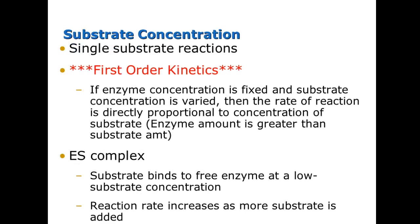When we look at how a reaction happens with an enzyme, we consider a couple of different types. First, we look at first-order kinetics. If enzyme concentration is fixed and substrate concentration is varied, then the rate of the reaction is directly proportional to the substrate — you need to memorize that definition. We have an enzyme-substrate (ES) complex, which occurs where the substrate binds to free enzyme at low substrate concentration.